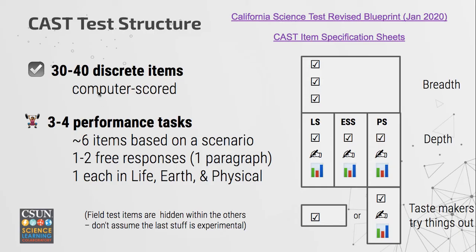Discrete items are computer-scored items that stand on their own — one question by themselves that don't link together from question to question. The number you have, whether you're at the 30 or 40 range, just depends upon whether you are at the elementary level or up to the high school level — the tests get longer. In addition to these computer-scored discrete items, there are also three to four performance tasks.